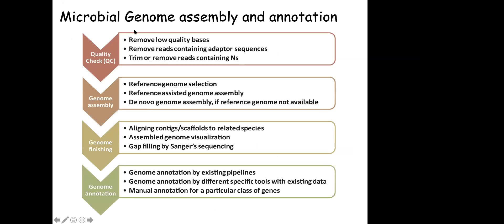Coming back to the pipeline: once we sequence the microbial genome, the first step is quality checking — removal of low-quality bases, removal of reads containing adapter sequences, and trimming or removing reads that contain Ns. When sequencers produce reads, some low-quality bases get incorporated, and we must remove these to improve the quality of our raw data.